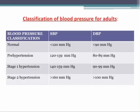Blood pressure is also classified into four stages: normal, pre-hypertension, stage 1, and stage 2. In the normal stage, systolic blood pressure should be less than 120 mmHg and diastolic less than 90 mmHg. In pre-hypertension, systolic lies within 120 to 139 and diastolic within 80 to 89. In stage 1 hypertension, systolic lies within 140 to 159 and diastolic within 90 to 99.